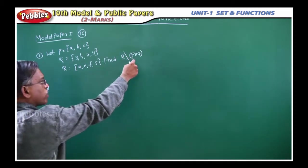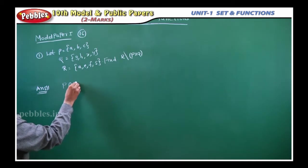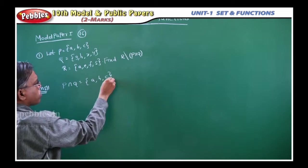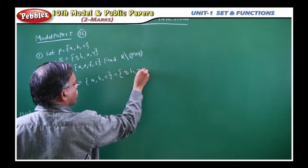So first what? You should find out P intersection Q. So P intersection Q, that is equal to P is the set containing the elements A, B, C intersection Q: G, H, X, Y.